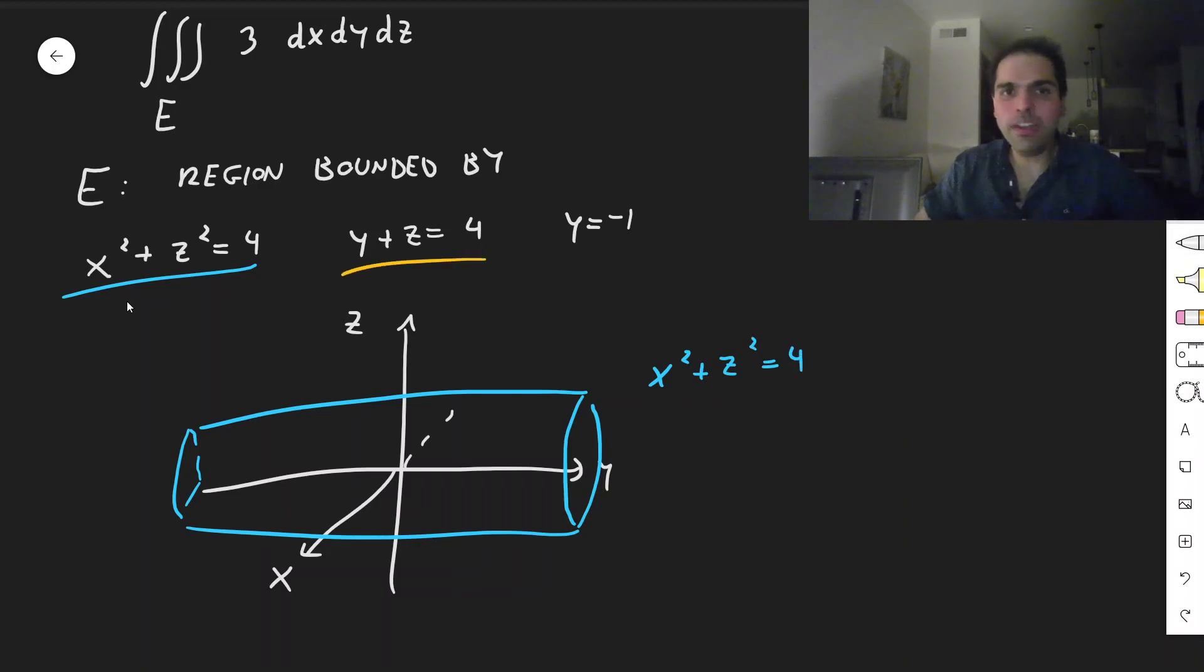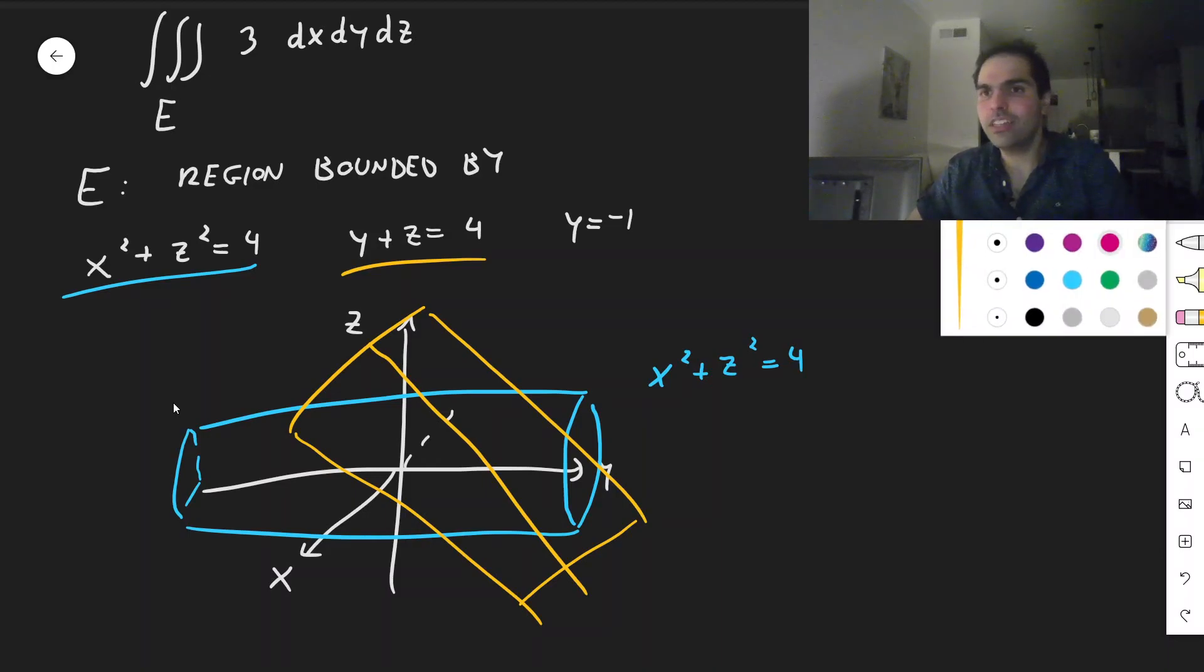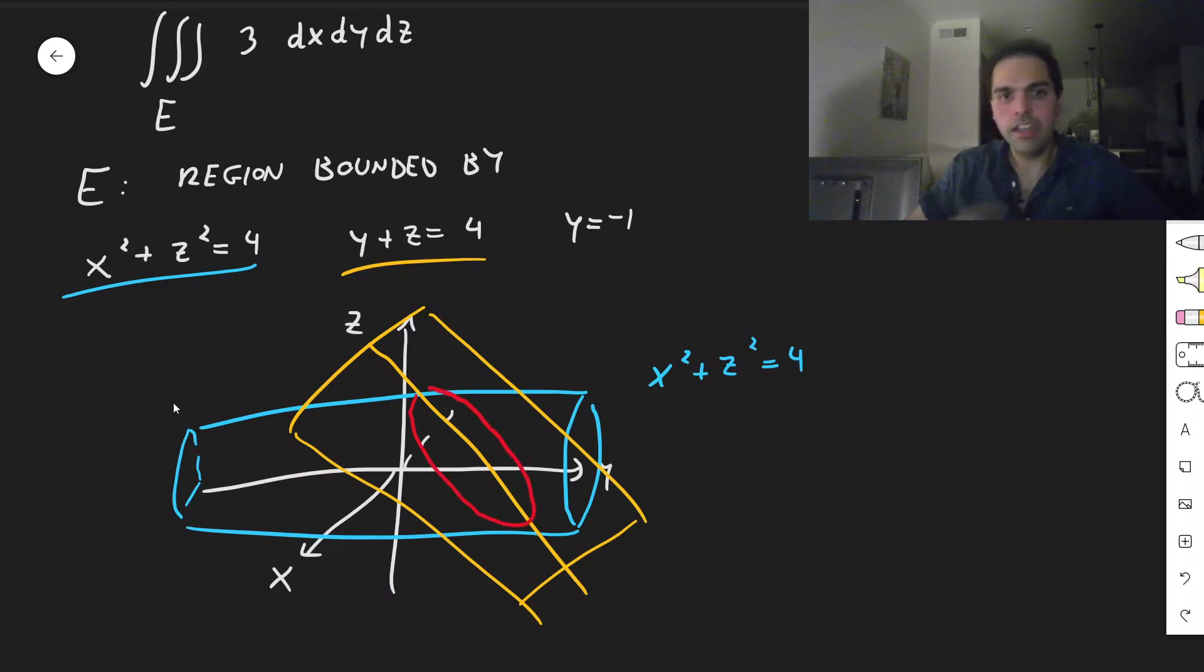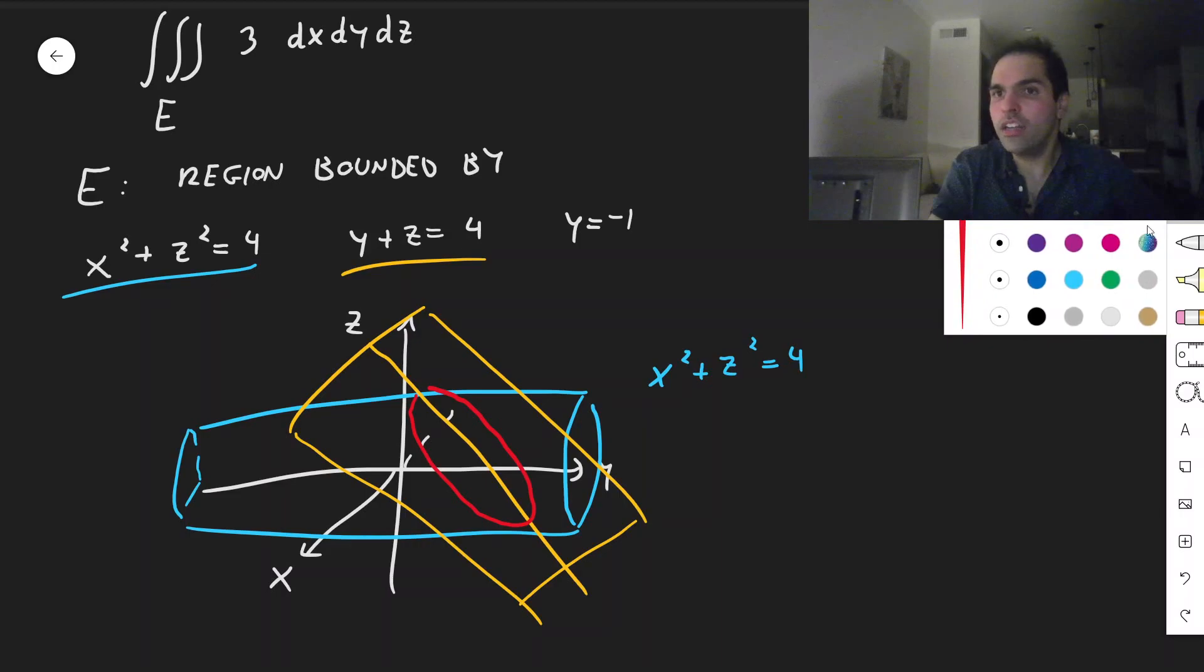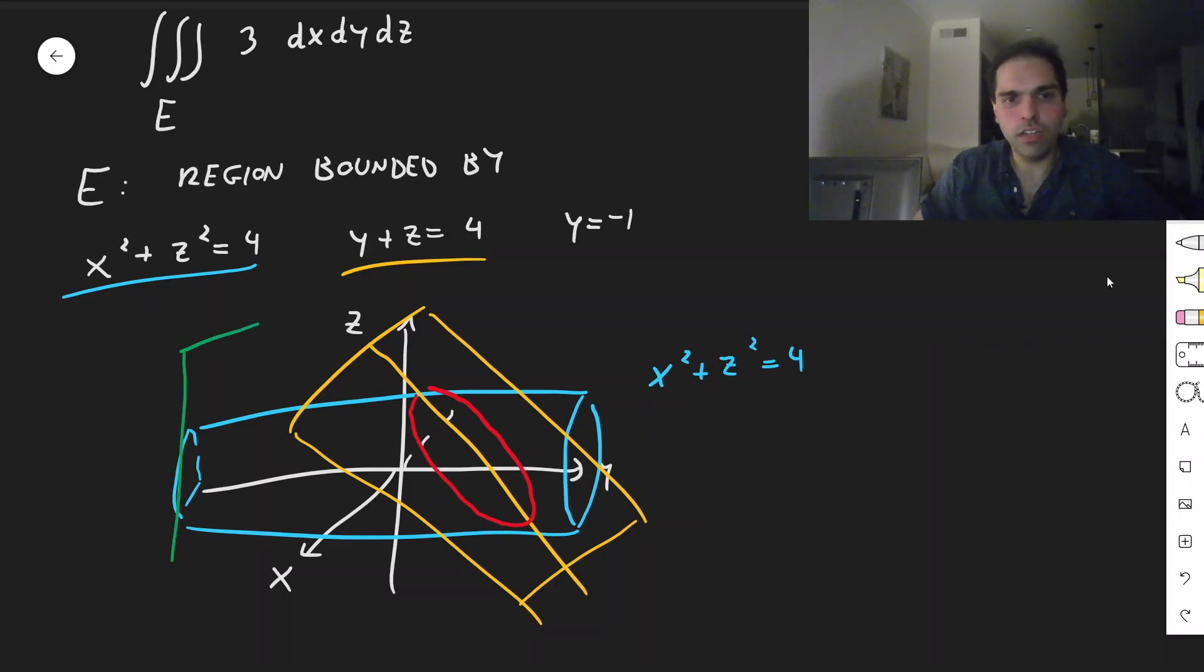And then y plus z equals 4, it is a plane that contains the line y plus z equals 4. And the way to think about this is you have this bread roll, like this baguette, and you're trying to slice this diagonally. And then finally, y equals minus 1, that's just a plane at minus 1. More straight, but like this.